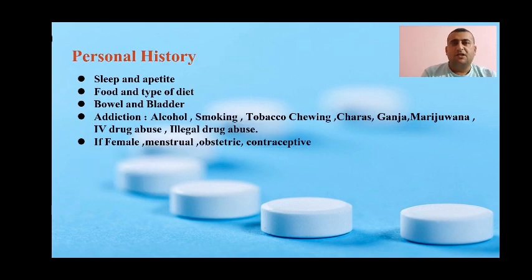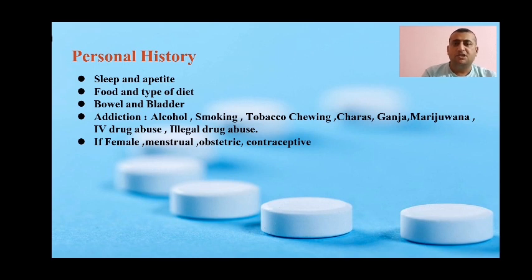In personal history, ask about sleep and appetite, food and type of diet — whether the patient has a vegetarian, non-vegetarian, or mixed diet — bowel and bladder habits. You should always ask about addiction: alcohol, smoking, tobacco chewing, charas, ganja, marijuana, IV drug use or illegal drug abuse. If the patient is female, history of menstrual, obstetric, and contraceptive use should also be included.